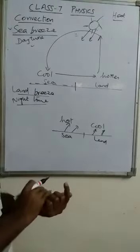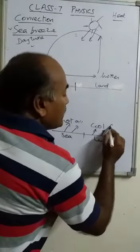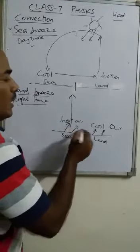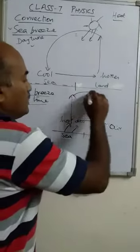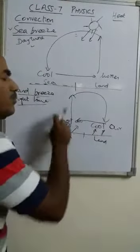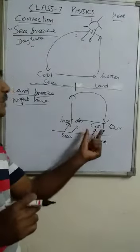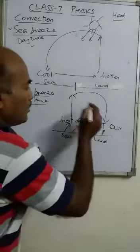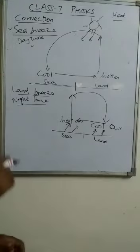Now the reverse situation takes place: over the sea surface the air is hotter, and over the land surface the air is cool. Once again the same process — the hot air rises up and the cool air blows from land to sea. In this process also, heat is transferred from hot to cold, so convection takes place. This blow of cool air from land to sea during nighttime is known as land breeze, which is also an example of convection.